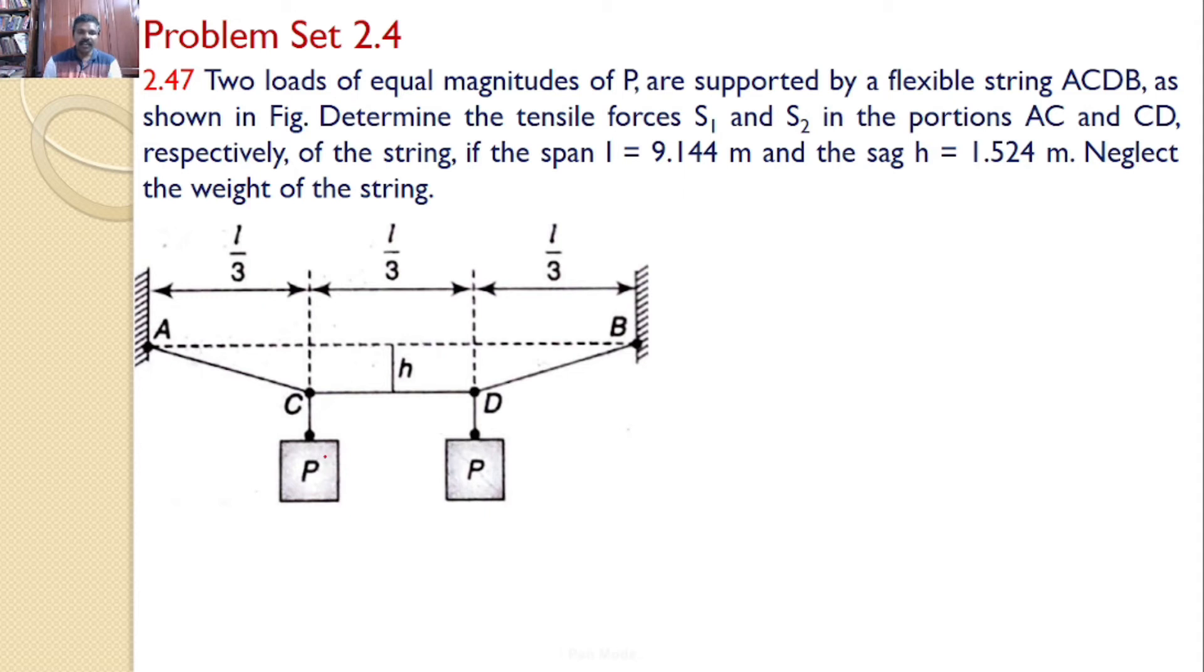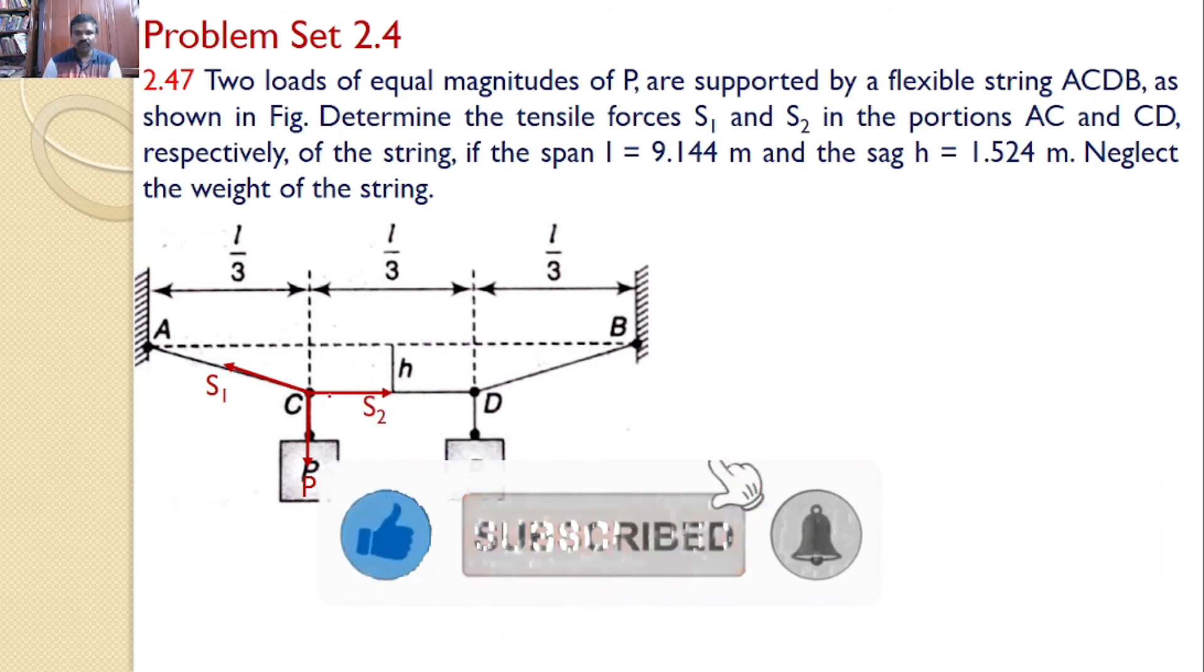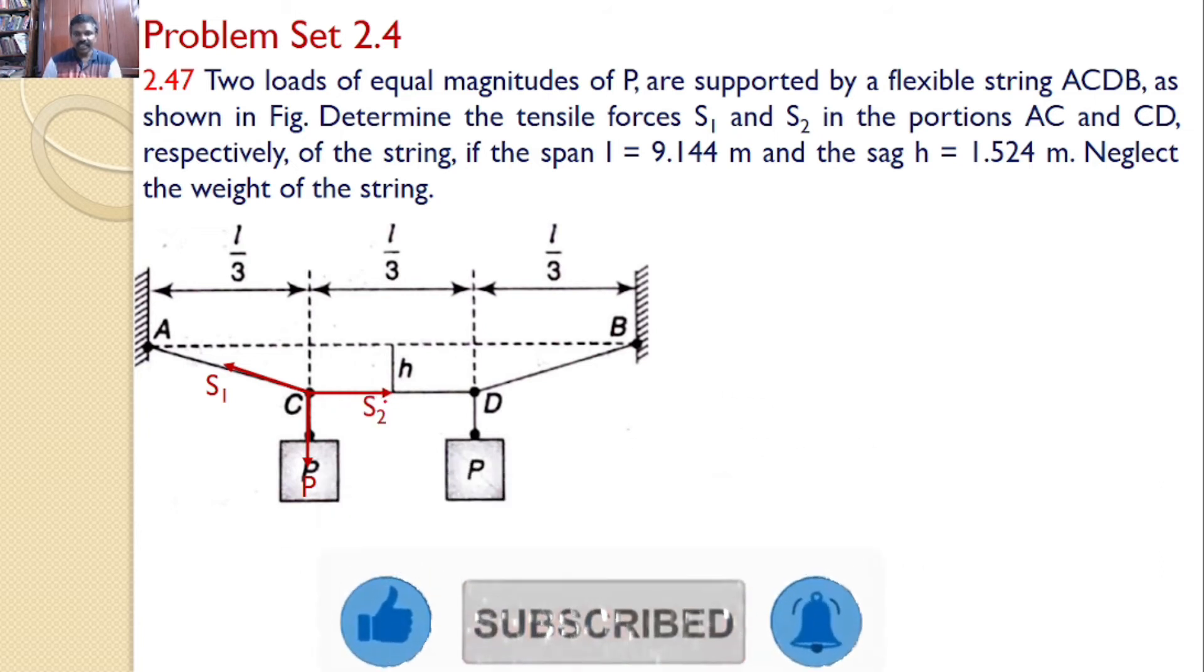We will take the free body diagram at C. What are the various forces acting at C? The first force is the self-weight P. Next force is the force along string AC, S1. I am assuming it is a tensile force, hence it is away from point C. Next force is S2, the force along CD. This also I am assuming is a tensile force, hence it is away from point C.